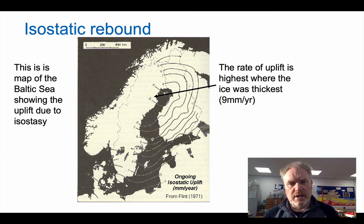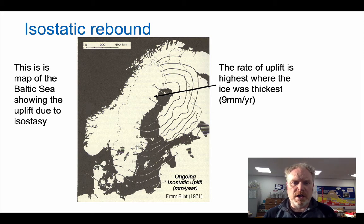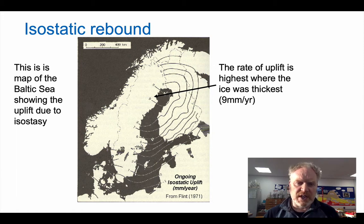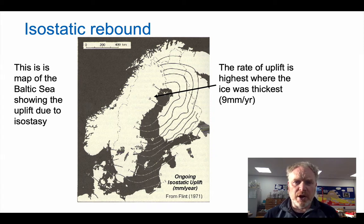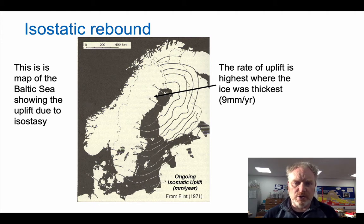Now, clearly there's a variation here. Where the ice was thickest up in the north of Sweden, that's where we're getting the most rebound. But if we look further south — look to Denmark, for example — you see there are parts that have an uplift of minus one millimetre a year. That means it's sinking very slowly into the sea.